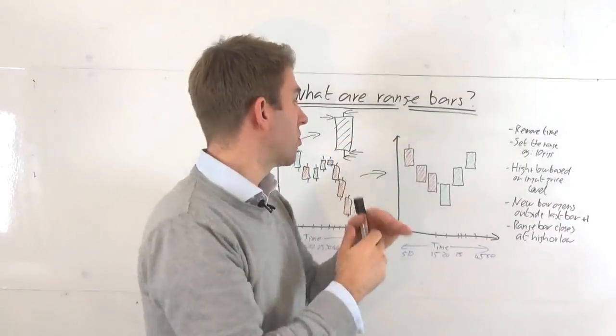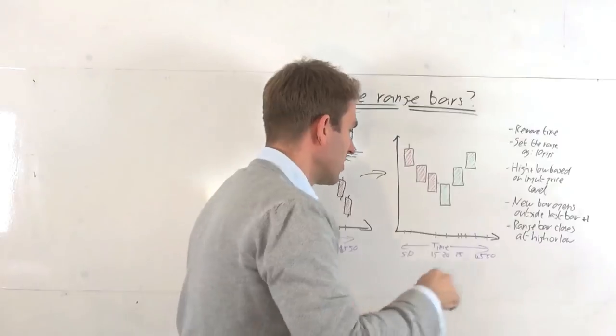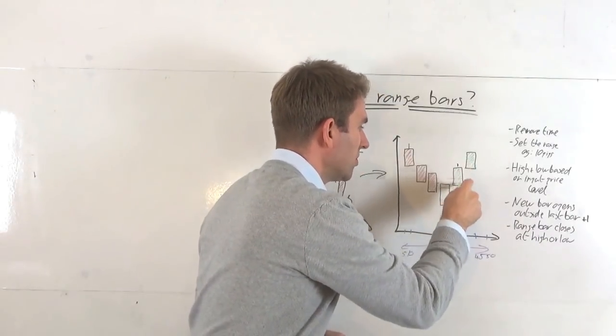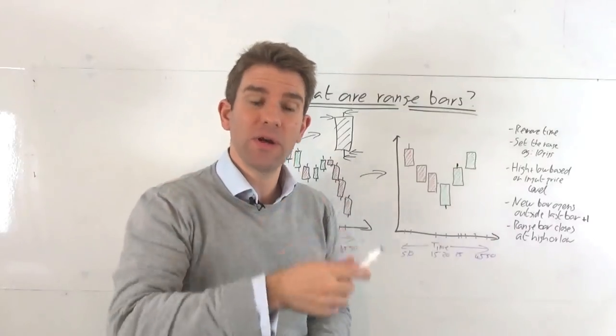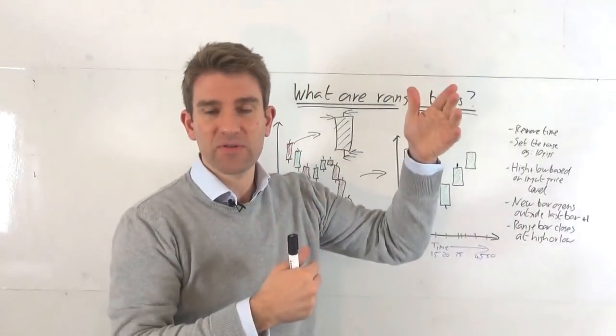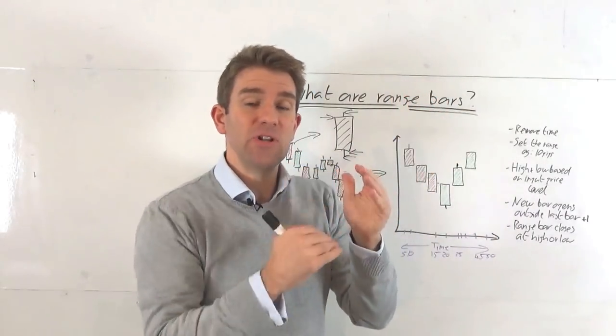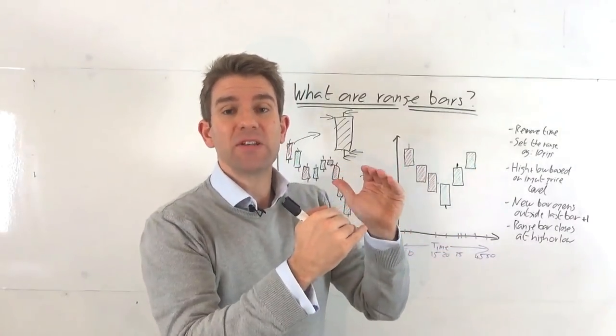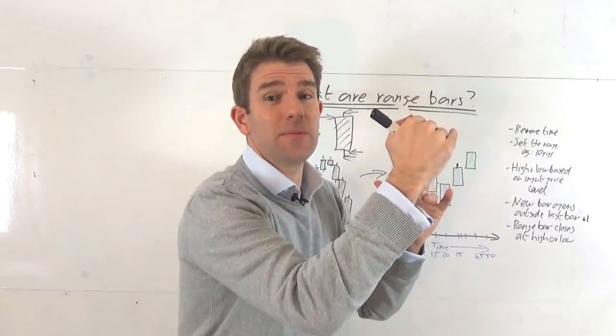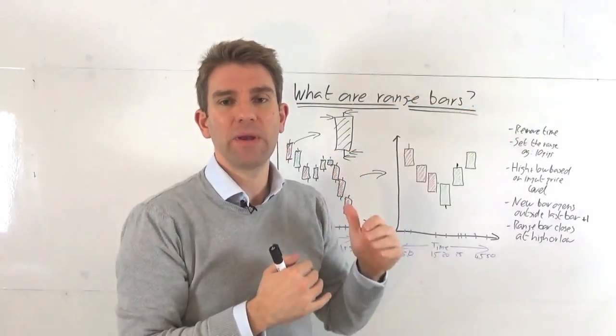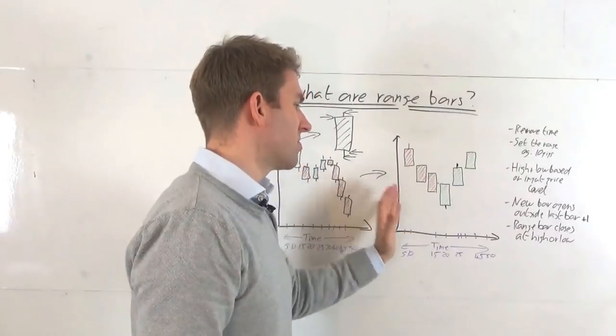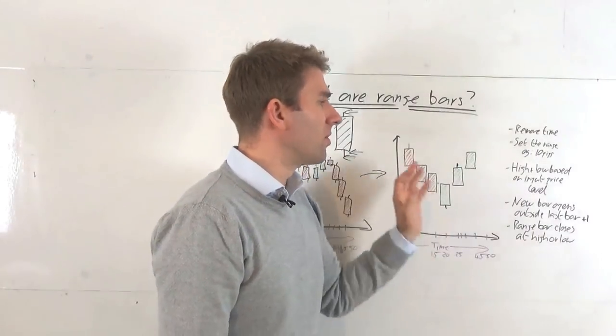Now, not to say you can't have a wick or a tail, you can. I've not drawn many on here, but you could quite easily have a wick or a tail, but you're going to have it on one side or the other. You're going to have either a wick or a tail on the upside or the downside, because you might get that intra bar move. But ultimately, as soon as it goes to the 10 pip range, bang, it's going to close that candlestick and start the next one on the 11th pip. So the range bar is going to close at the high or the low.